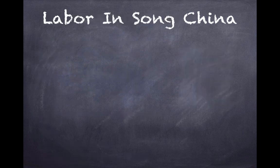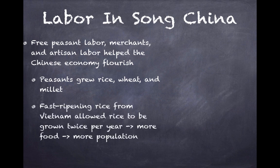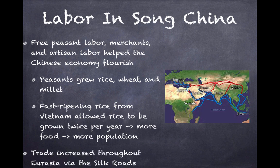Jumping over to labor in Song China: free peasant labor, merchants, and artisan labor helped the Chinese economy flourish. Peasants grew rice, wheat, and millet. Fast-ripening rice from Vietnam allowed rice to be grown twice per year, leading to more food production, which fed more people and led to a population increase in China. Trade also increased throughout Eurasia via the Silk Roads, with China drastically increasing trade throughout Eurasia.